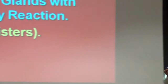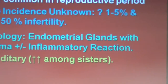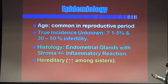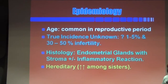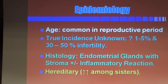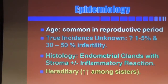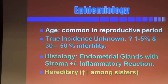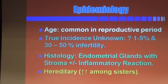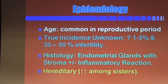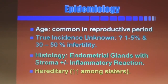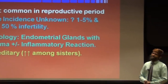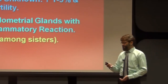To recap epidemiology: first, age is the factor, especially reproductive age group. Second, incidence is not known — worldwide somewhere 1 to 5 percent — but we see it maximum in infertile patients. Third, histologically PID etc. are cases that get involved. Fourth, there is a genetic predisposition or linkage.